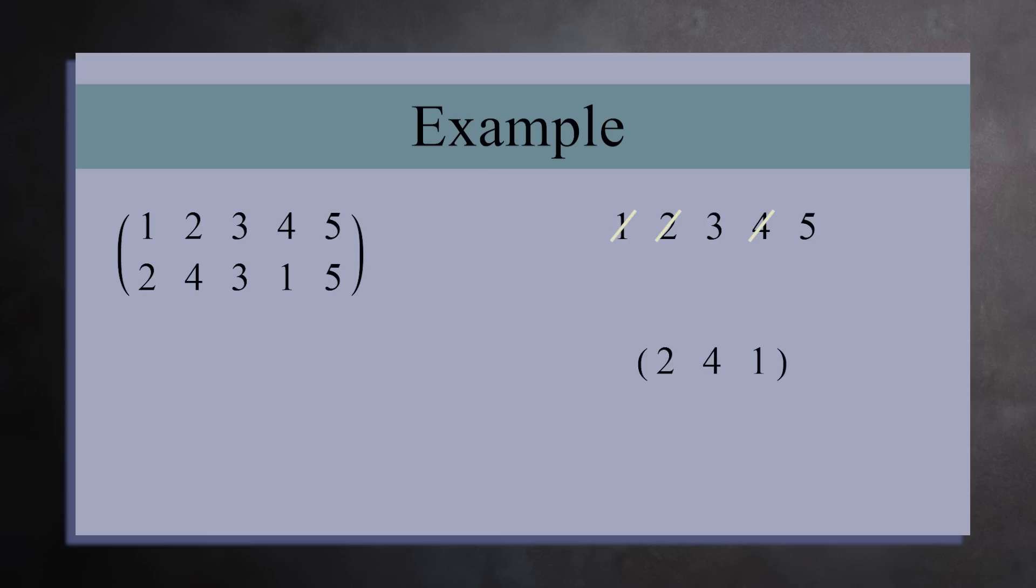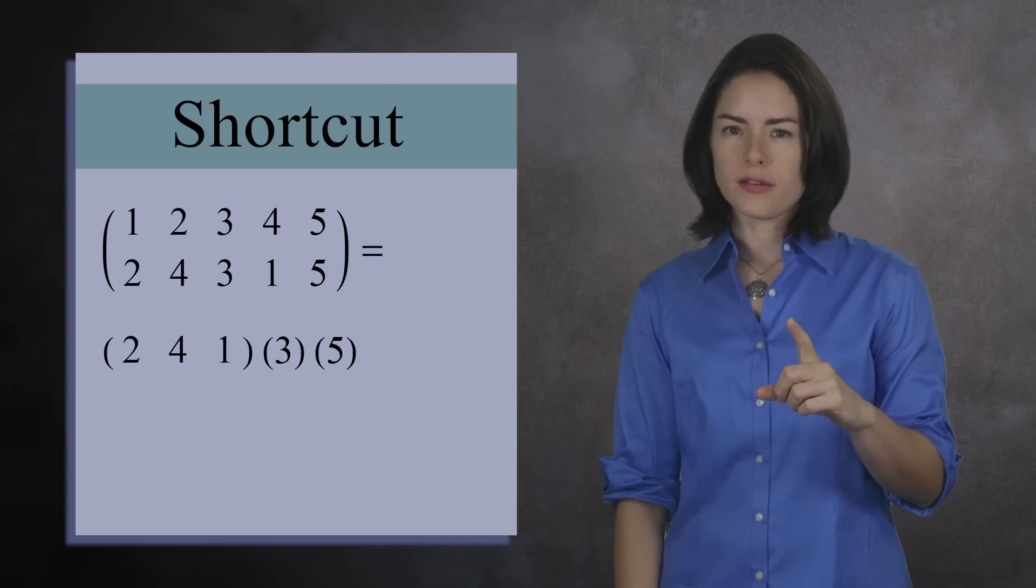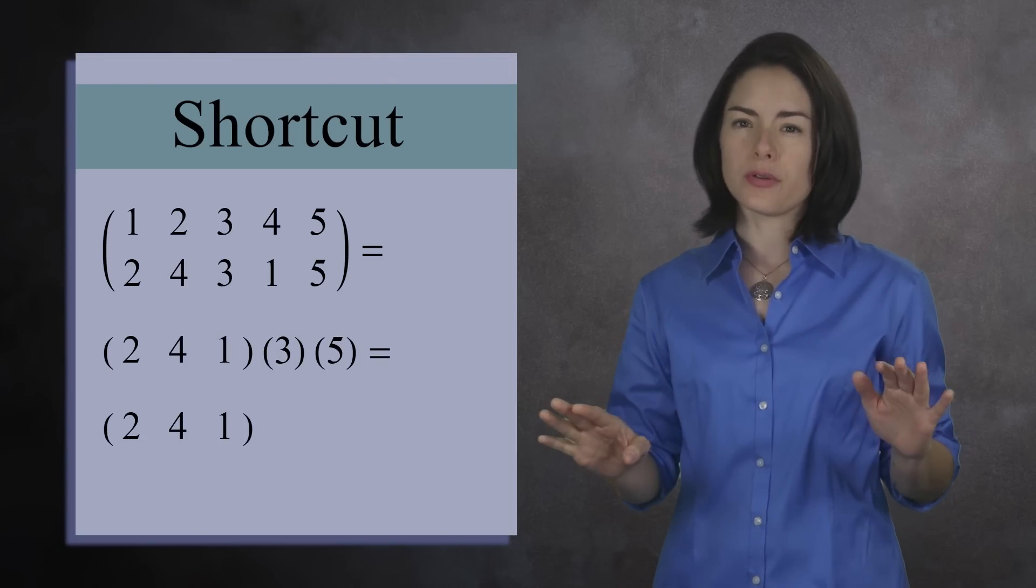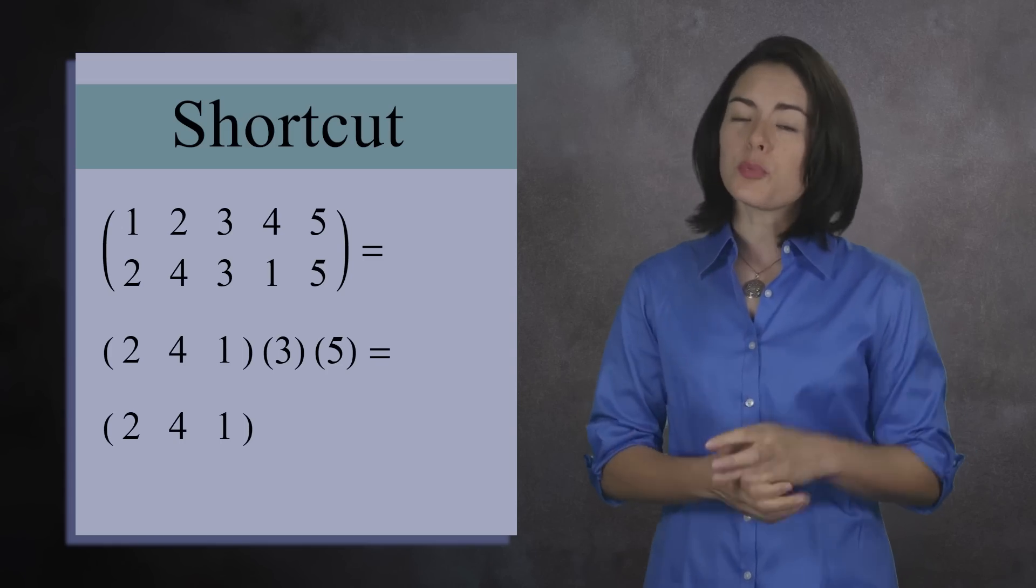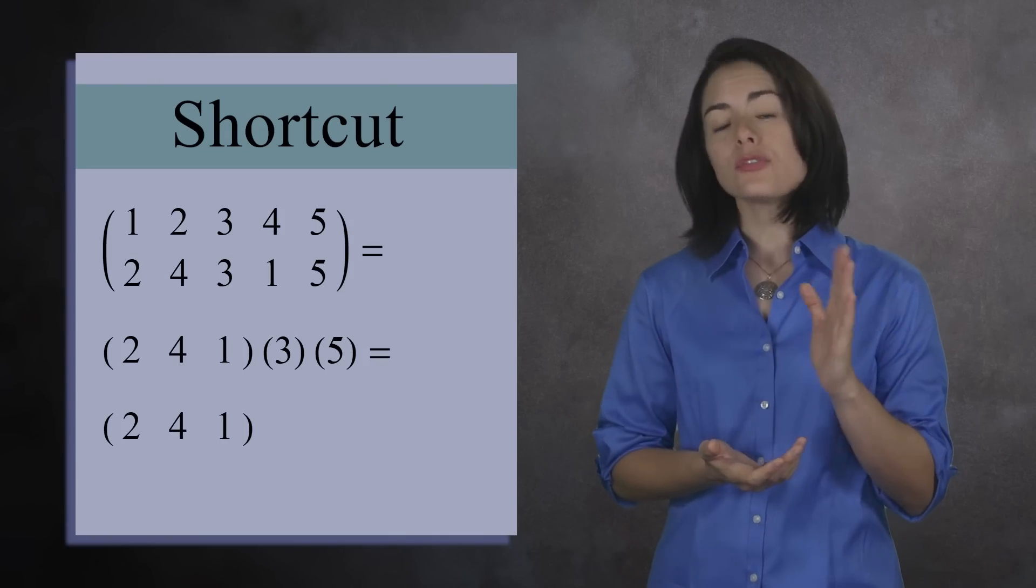We can mark off these three numbers from our list. Next, we pick another number that has not yet appeared in a cycle, and repeat the process. Let's pick 3. 3 maps to itself. So this gives us a cycle with a single number. Scratch off 3. And 5 maps to itself as well. This gives us another cycle with a single number. We can scratch off 5. So this permutation is a product of 3 cycles. A 3 cycle, a 1 cycle, and another 1 cycle. Here's another shortcut. Whenever you have a 1 cycle, you can go ahead and leave it out. This is because 1 cycles do not change any number, so we can safely ignore them. This means the permutation can be written simply as a 3 cycle 2, 4, 1.